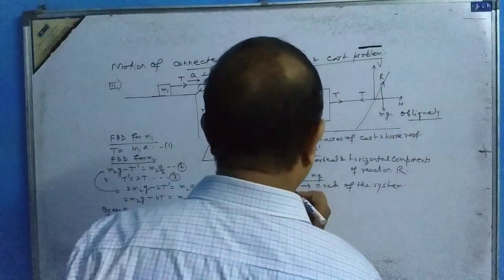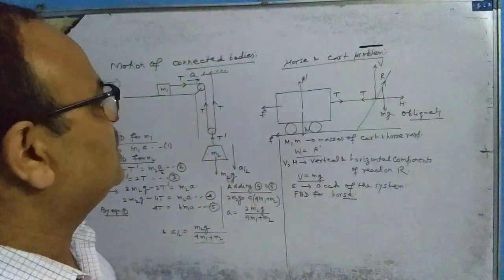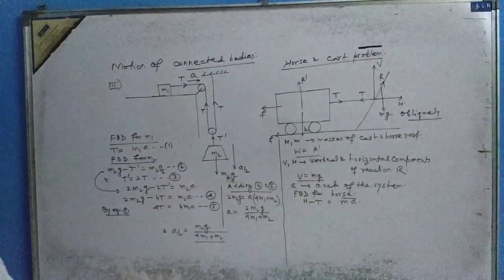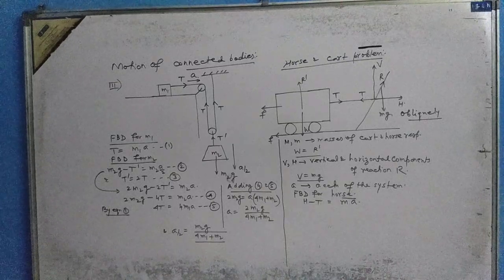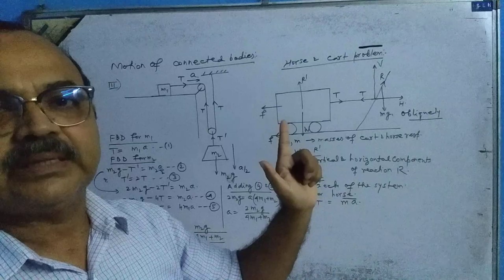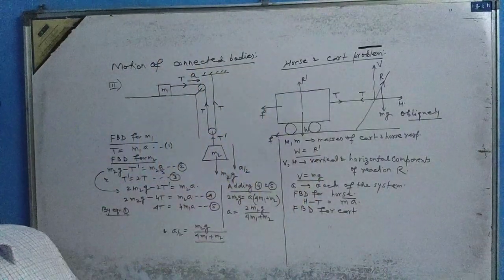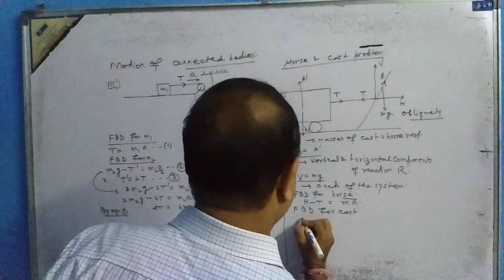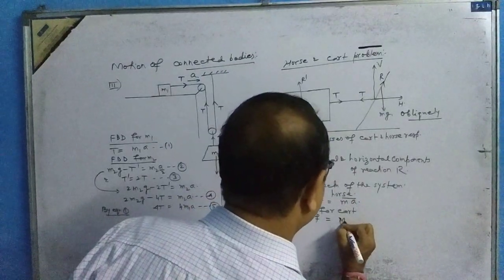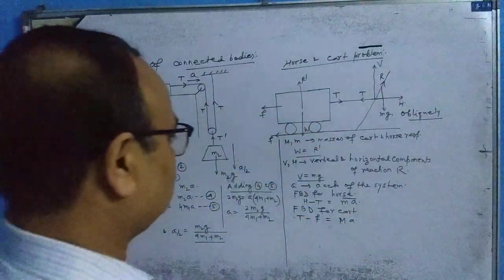If small a is the acceleration of the system, we apply FBD for the horse: H − T = m·A, where H is the horizontal reaction forward and T is the tension backward. For the cart, FBD gives: T − F = M·A, where F is the frictional force on the cart.